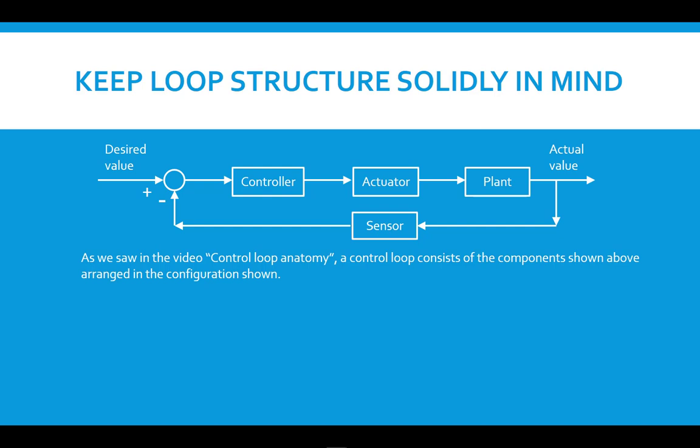So, we had an earlier video in this series called Control Loop Anatomy. In that video, I described the various parts and pieces of a control system and how they fit together. There are four, sometimes five, depending upon how you count them, in the control loop.